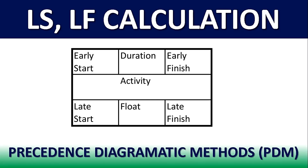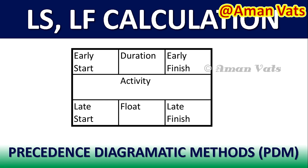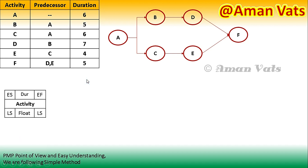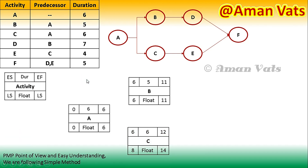In my previous video I explained the calculation of early start and early finish based on an activity diagram. Continuing my series on the precedence diagramming method, in this video I'll talk about how to calculate late start and late finish. This particular slide I have been using continuously in my precedence diagramming method explanation, where I have defined the activities, their predecessors, and duration — and this is the overall diagram we created.